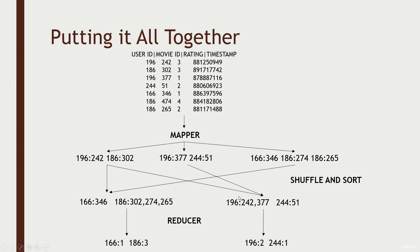At that point, things get sent to different reducers, and reducers can also be run in parallel. Each node might be responsible for reducing a given set of keys. In this fabricated example, I have two reducers — one being fed data for user IDs 166 and 186, while the other reducer is being fed data for users 196 and 244. For a given key, all the information that key needs is given to the reducer, so we can reduce different keys in parallel across different computers.